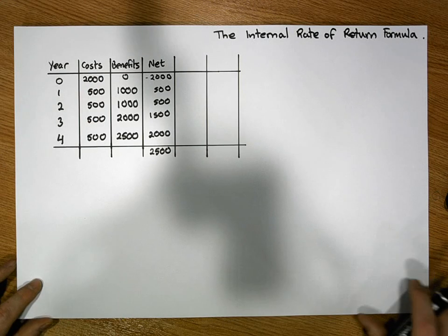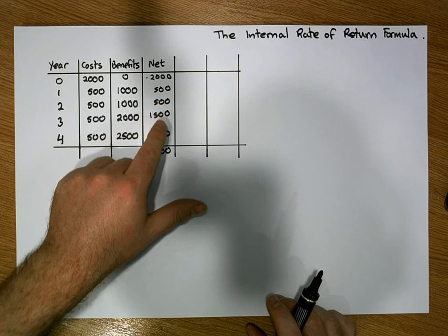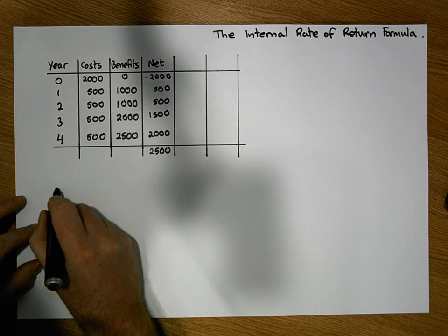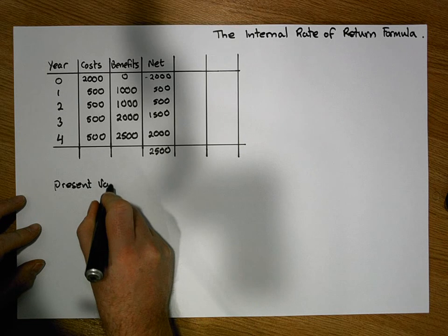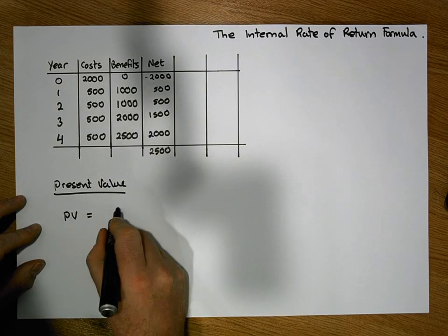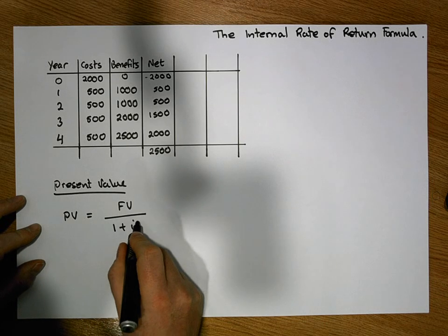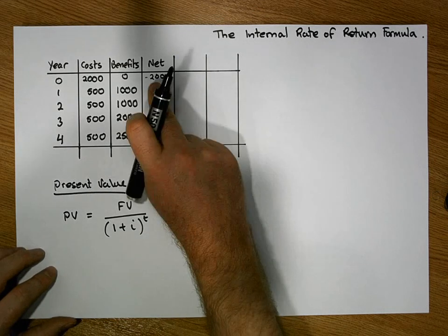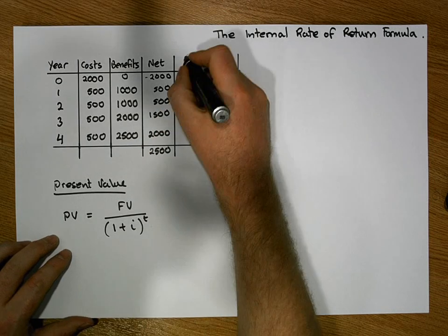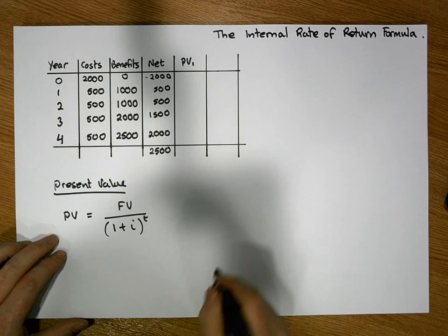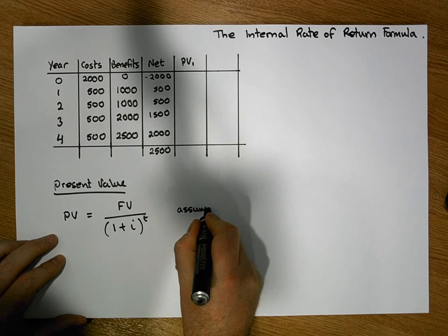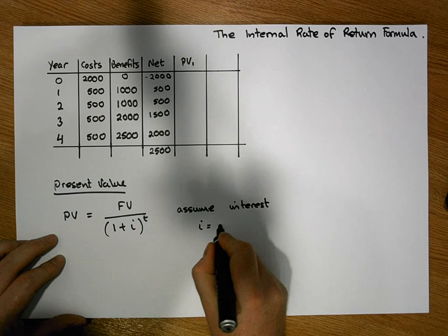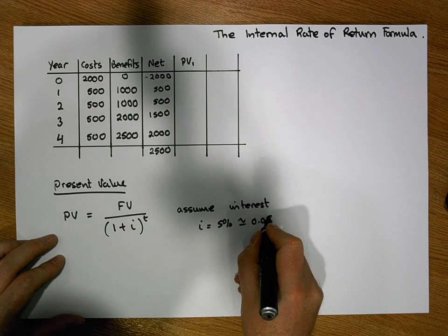What we typically do is calculate the present value for each of our net values for each year. The present value formula tells us that the present value of a future value is simply equal to the future value divided by (1 + i) raised to the power of t, where t represents how many years we're discounting by. Let's assume the interest rate i is equal to 5%, or 0.05 as a decimal.